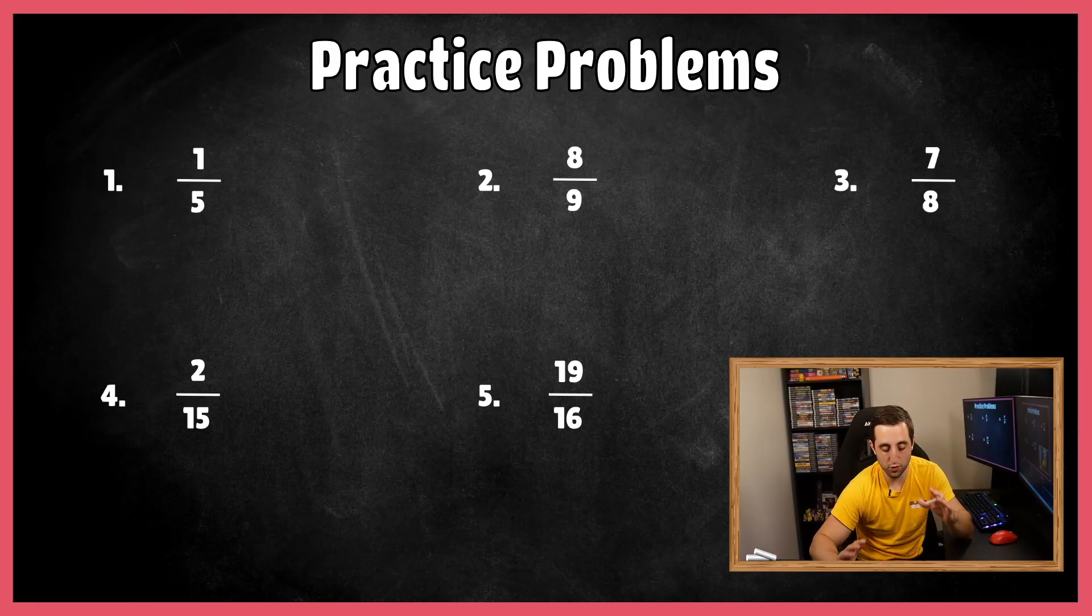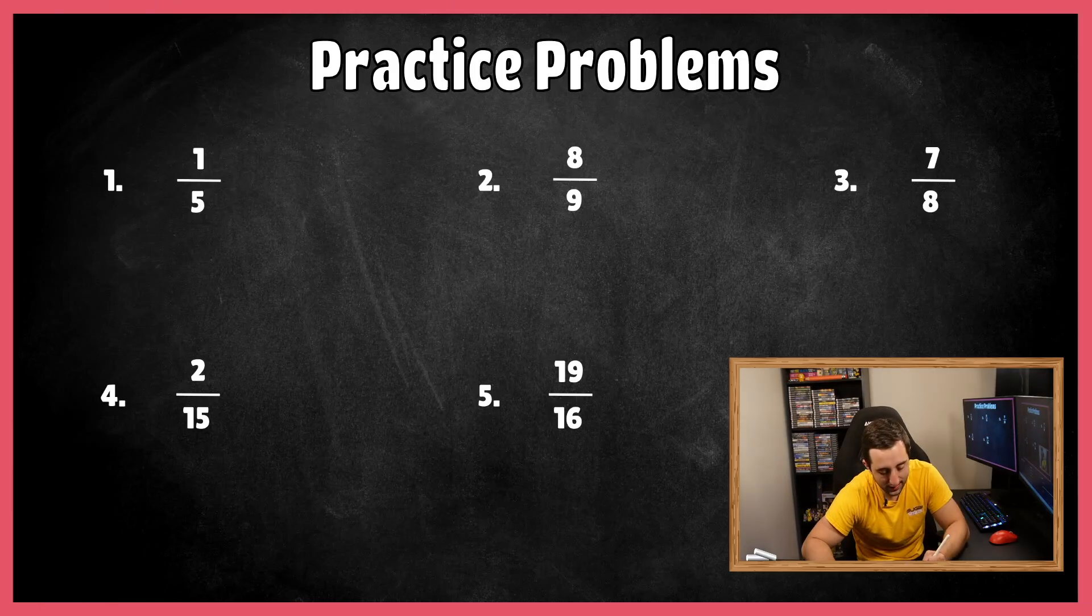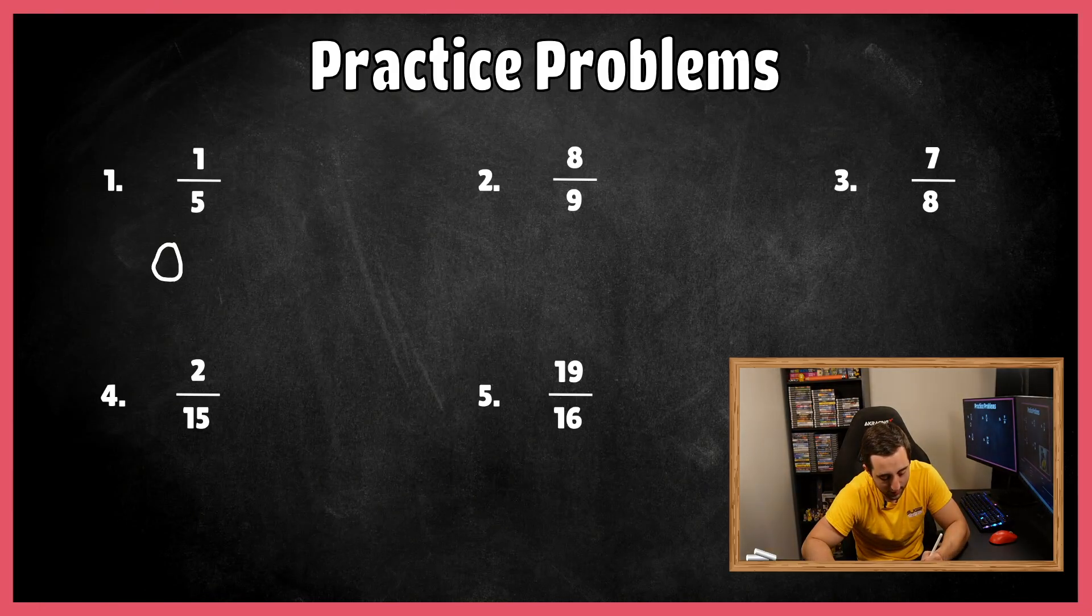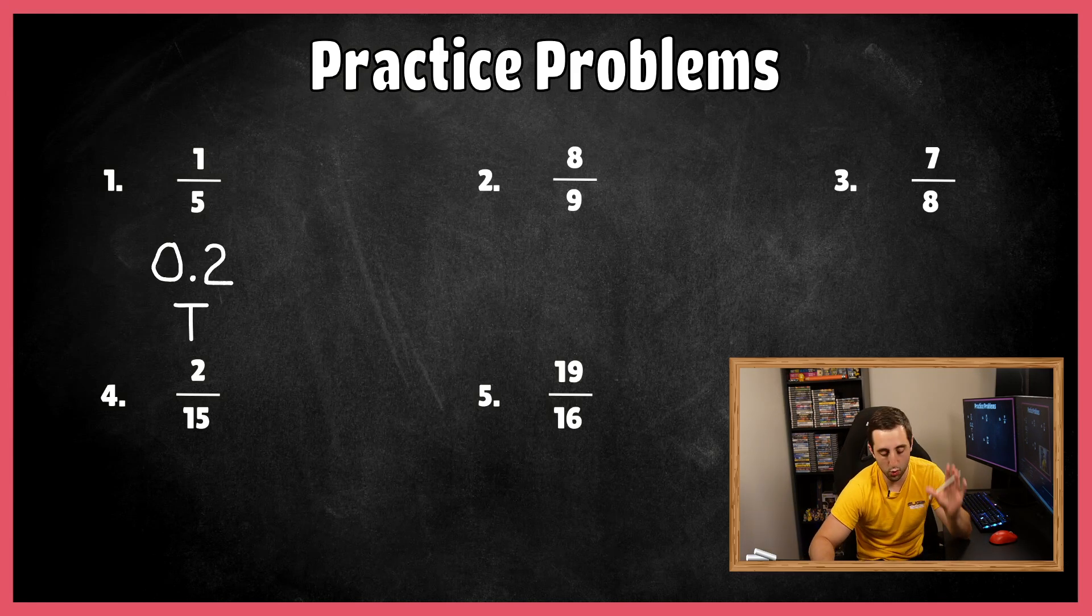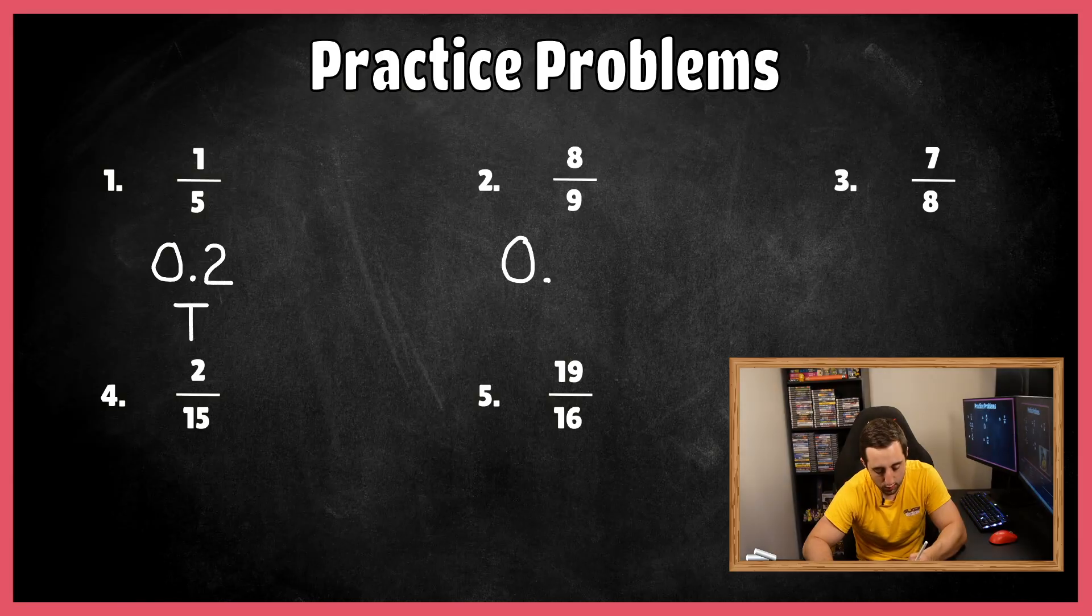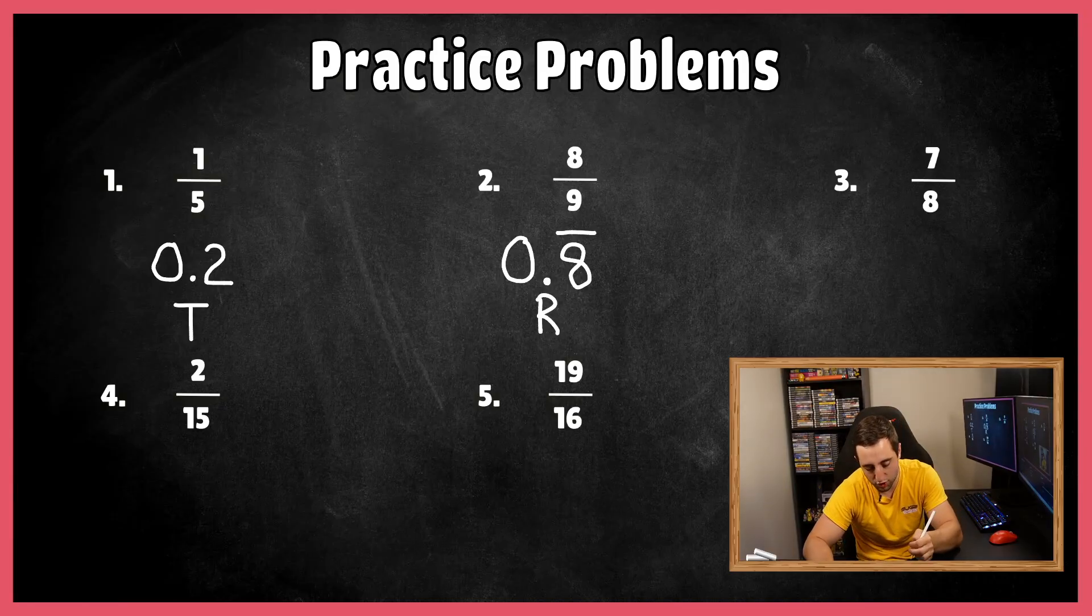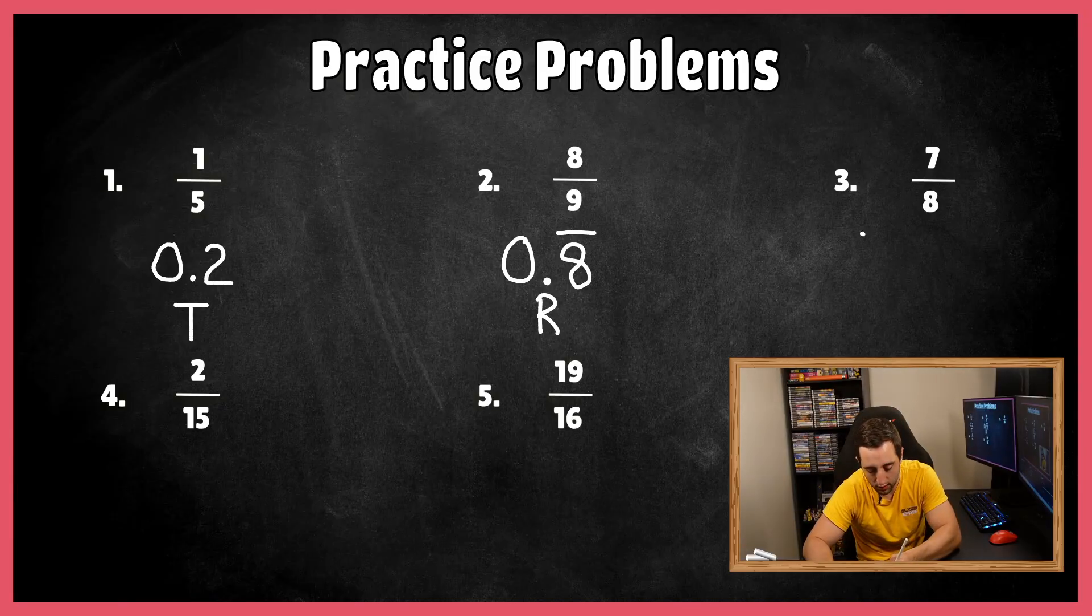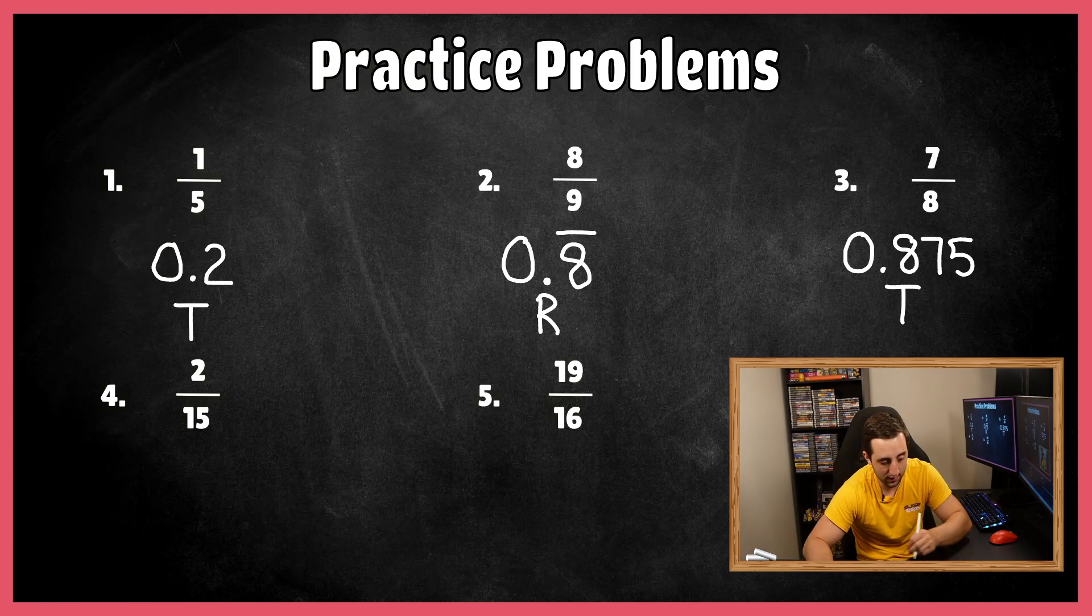So I'm assuming at this point you have tried out all five practice problems, and now we're going to run through the answers. So the first one, you should have got a terminating decimal of 0.2 or two-tenths. So this should have been a terminating where it stops after the two. There's no additional numbers after that. For number two, this should have been a repeating decimal and you would have got 0.8 repeating and that eight just repeating forever and ever and ever. So I'm just going to write an R there for repeating. And then for seven-eighths, this should have been another terminating decimal. This would have been 0.875 or 875 thousandths and it stops after the five making this terminating.